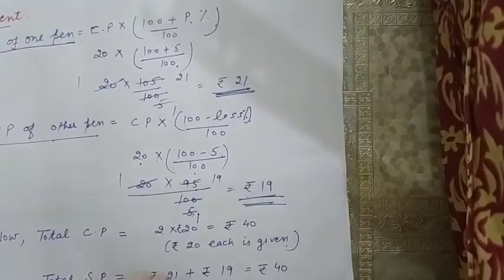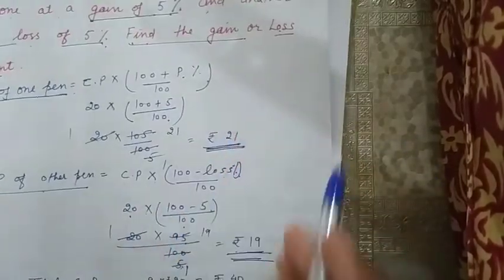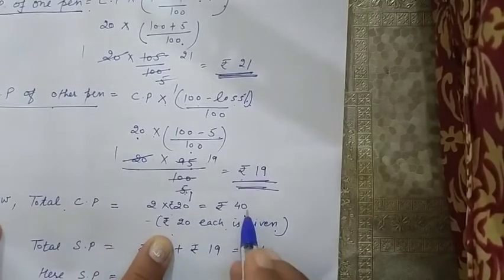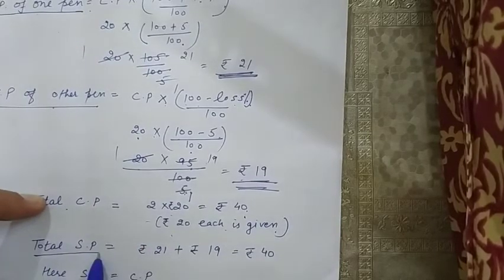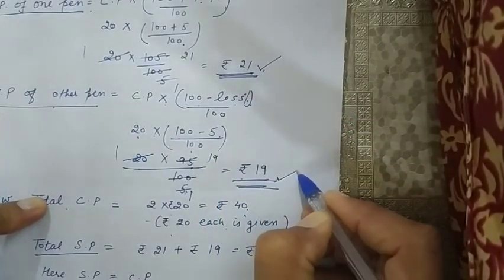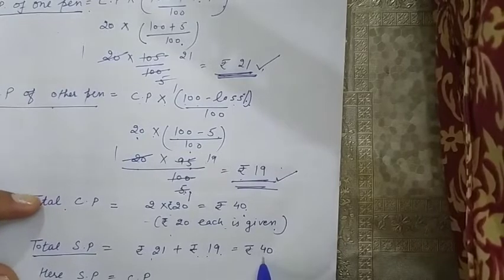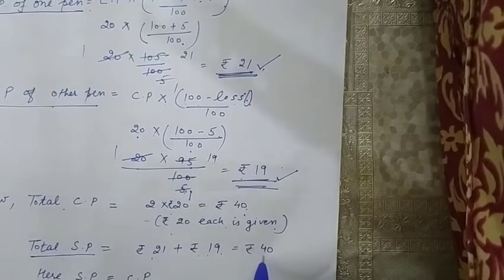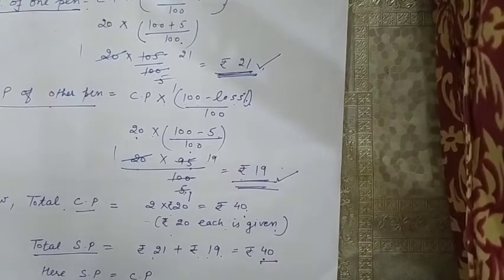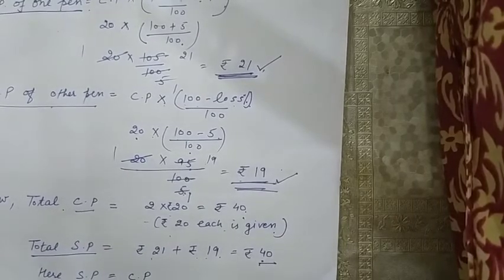Toh ab ab aap ne ghii dhekna hai. Ki total joh CP thi. 20 rupiz each ke hsap se. Hamei khariida tha tha pen ko. Total CP kitni ho gai? 40 rupiz. Chyokhi dho pen kharii dhe thai haem ne. Toh uuski total CP kitni ho gai? 40 rupiz. Ab kya hai? Or total SP kitni ho gai? 21 ki 21 hai. Or 19 dousre pen ki hai. Toh in doonho ka selling price kitna ho gai? 21 plus rupiz 90. 19 rupiz 40 iska selling price ho gai. Bacchi ab kya bata na hai? Ki aap ke paas 40 rupiz hi course price tha. Or 40 rupiz hi selling price hai. Toh it means aapke donho hii chyijay same hai. Toh isme aapko na to loss huwa. Or na hi profit huwa.